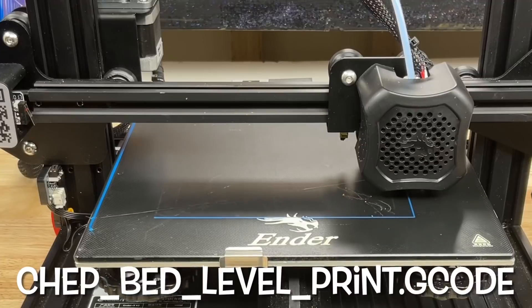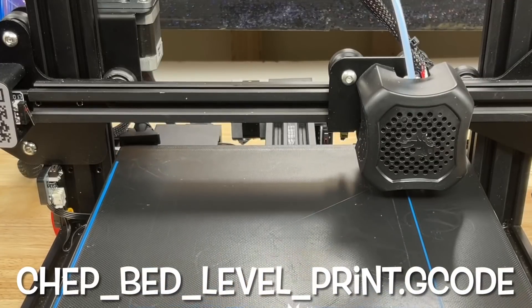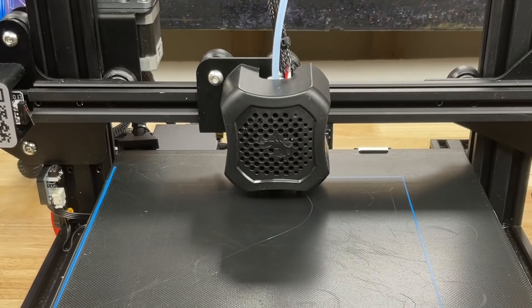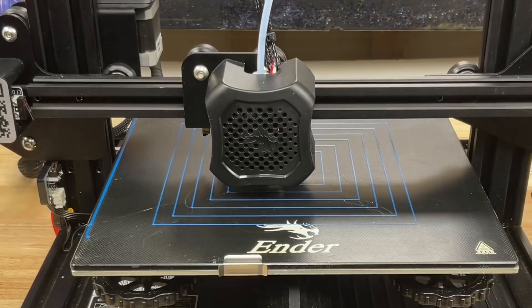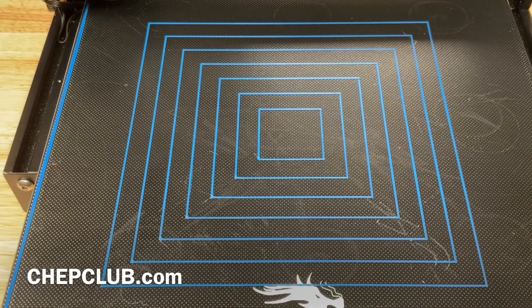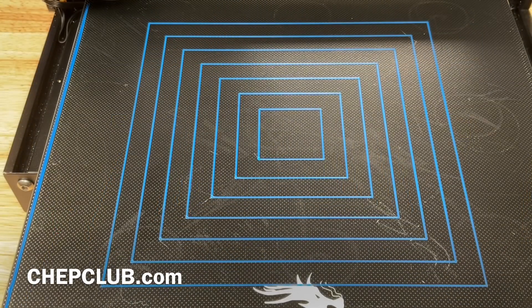The next step is to run the test print which puts squares all around the bed. Just a series of squares working its way to the center to the final square. And here's proof that this thing worked really well. I have a nice even bed level across the whole bed.